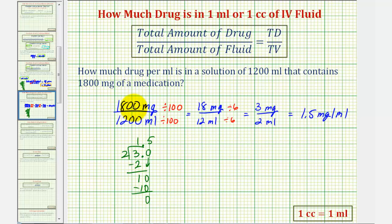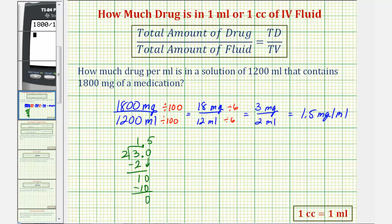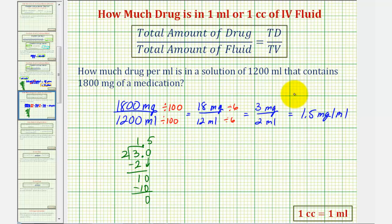Now of course if we're allowed to use a calculator, we can go ahead and perform this division here. Let's go ahead and show that. One thousand eight hundred divided by one thousand two hundred. And of course the result is the same. I hope you found this helpful.